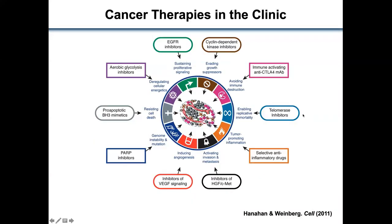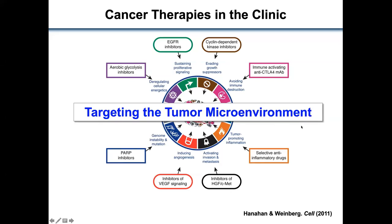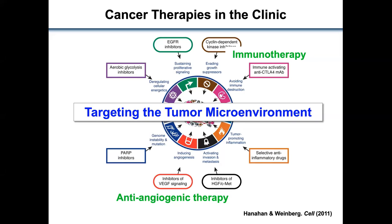For brief background information, there are various types of cancer therapies available in the clinic. Previously, there were more attempts to develop therapies to kill cancer cells directly, such as chemo or radiation therapy or targeted therapy. However, these days, more and more drugs are being developed to target the tumor microenvironment, such as immunotherapy or anti-angiogenic therapy. Given the success of these drugs, it is quite obvious that targeting the microenvironment is very effective in treating cancers.